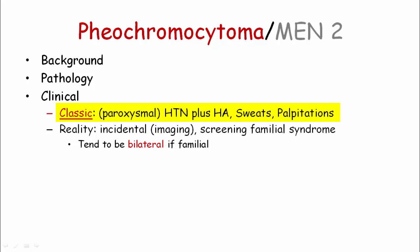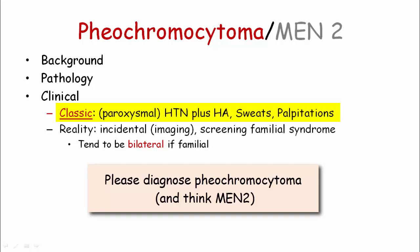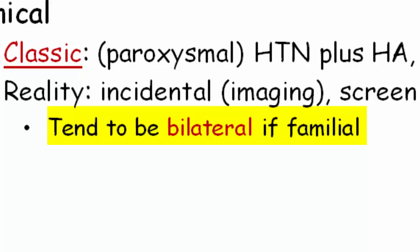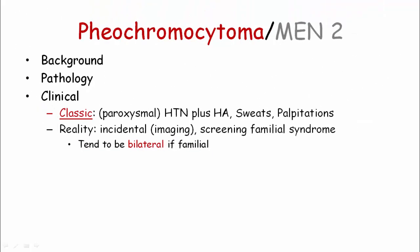The classic presentation of pheochromocytoma is paroxysmal hypertension with headaches, sweats, and palpitations. On board questions, the blood pressure will be over-the-top high — values elevated to the 220 over 110 range — you won't have to squint to find it. In current clinical reality, the majority are found incidentally on imaging. If the pheochromocytoma is part of a familial syndrome, it is likely to be described as bilateral. Bilateral adrenal tumors in a patient with pheo symptoms most assuredly means you're dealing with an MEN2 question.